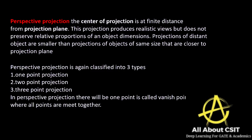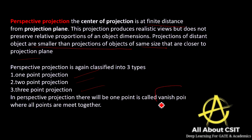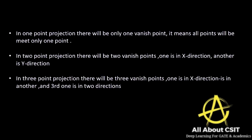Now coming to perspective projection. The center of projection is at a finite distance from the projection plane. This projection produces a realistic view but does not preserve relative proportions of an object's dimensions. Projections of distant objects are smaller than projections of objects of the same size closer to the projection plane. Perspective projections are classified into three types: one-point, two-point, and three-point. In perspective projection, a vanish point is used where all points meet together.